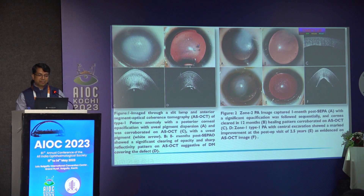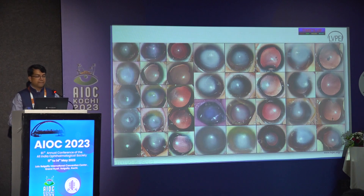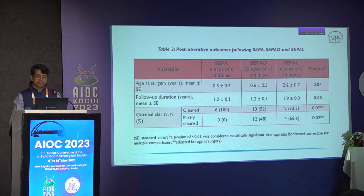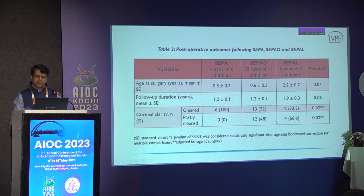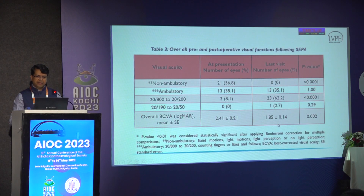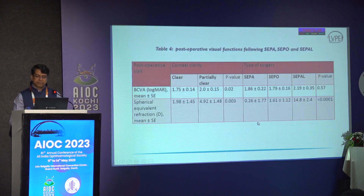We label outcomes as partial clearing versus complete clearing. A variety of indications have led to good outcomes, including in type 2 cases. One hundred percent of moderate cases had clearance, and 52 percent of more severe cases had partial clearance. All of them had good visual improvement.